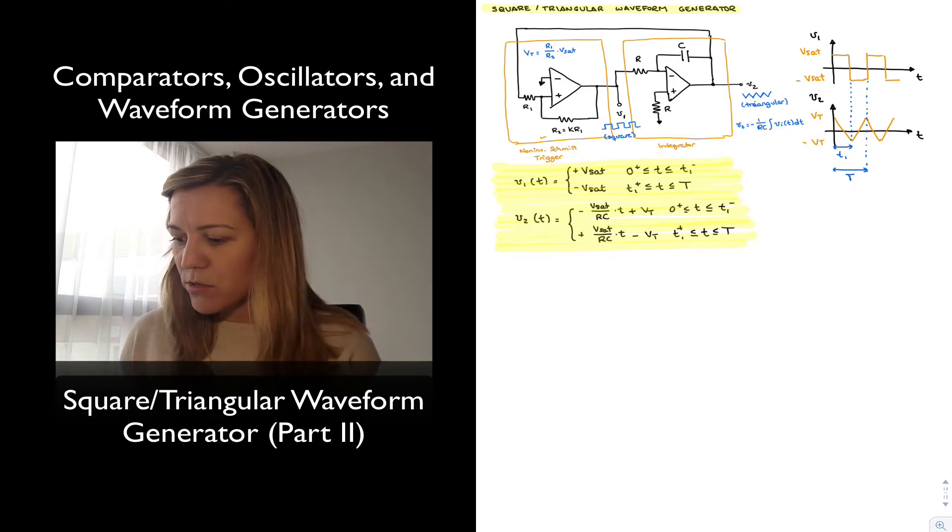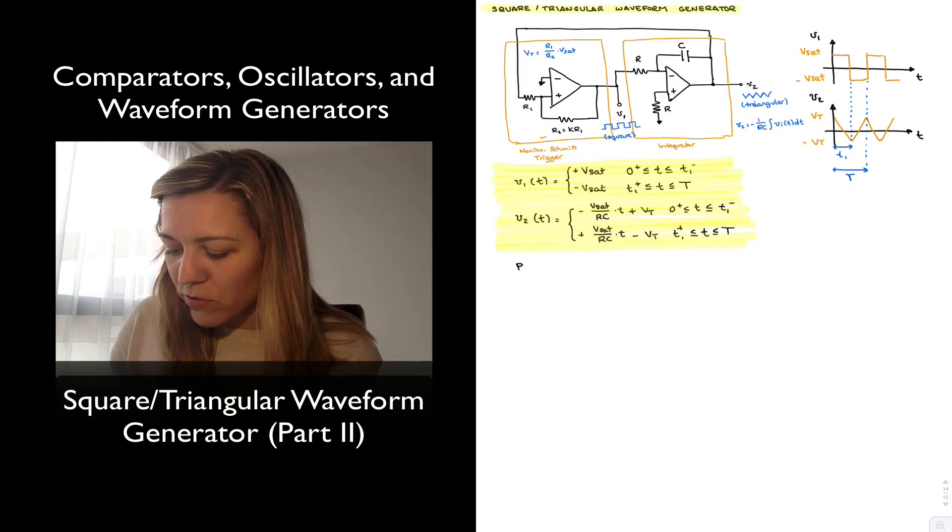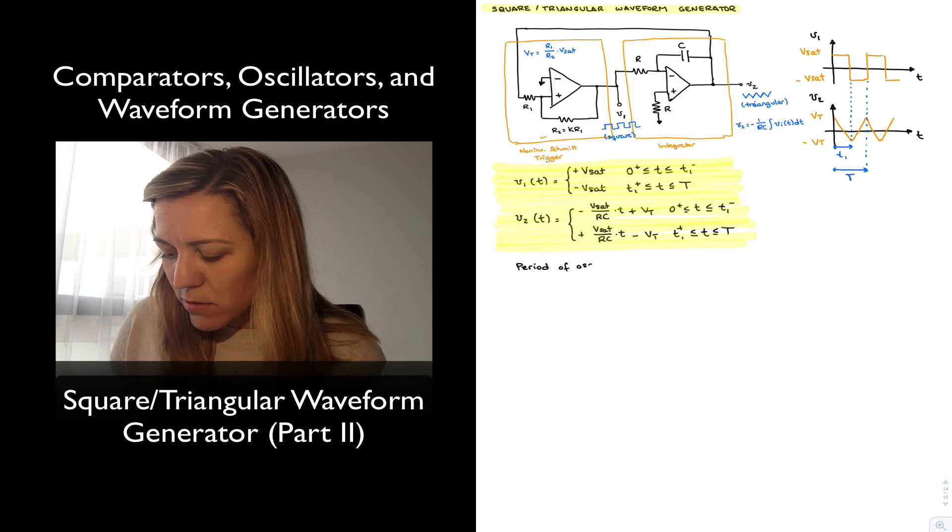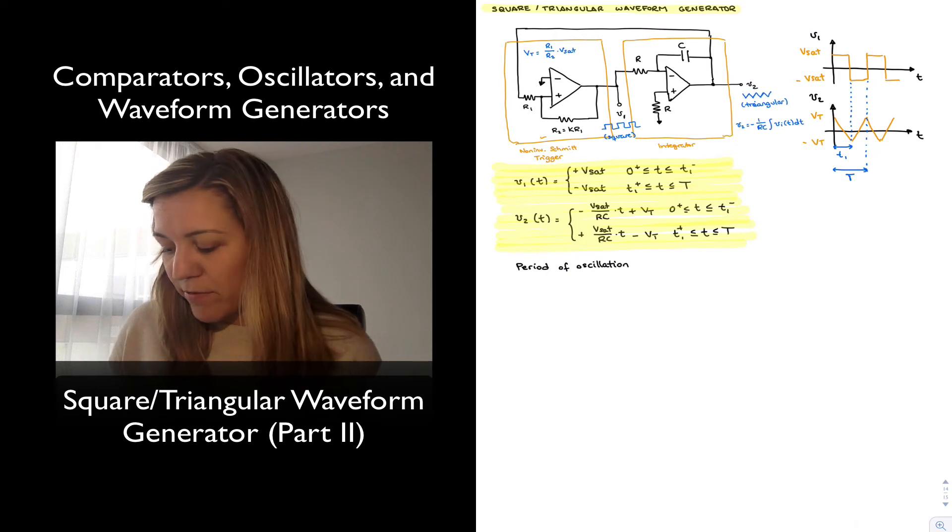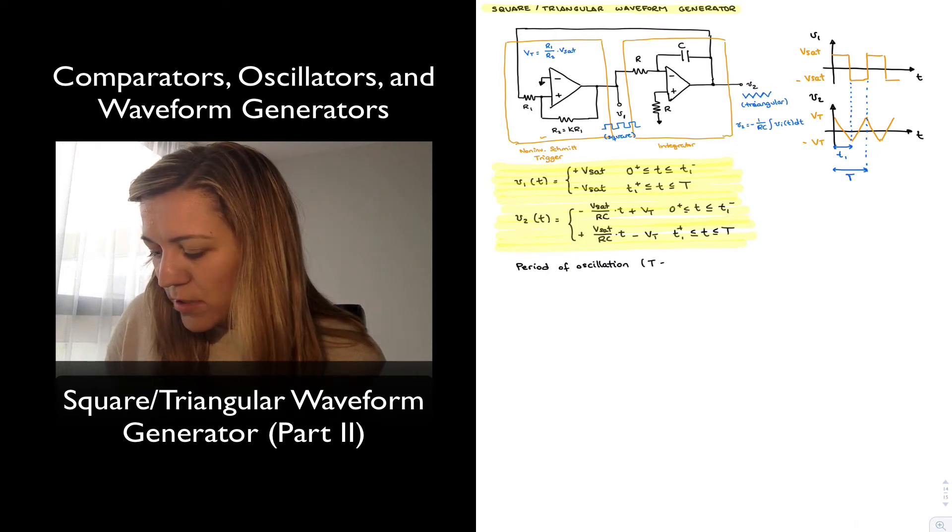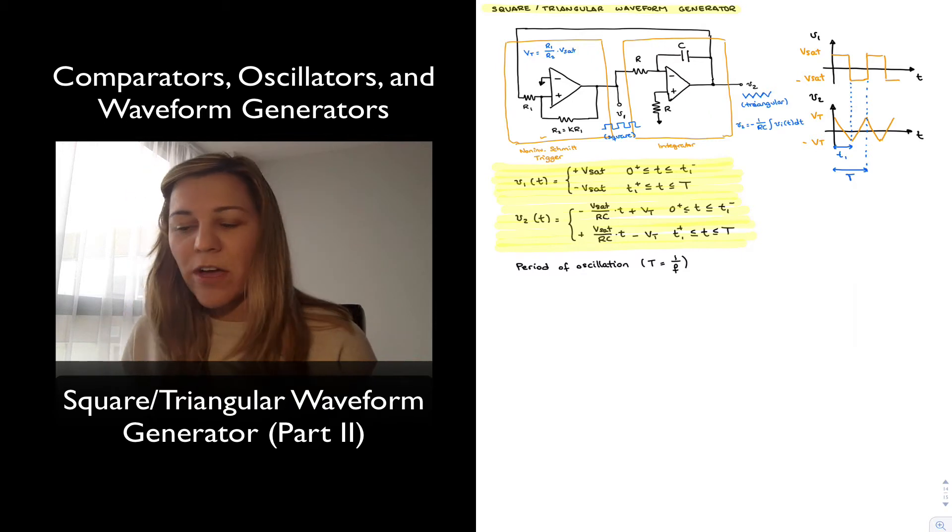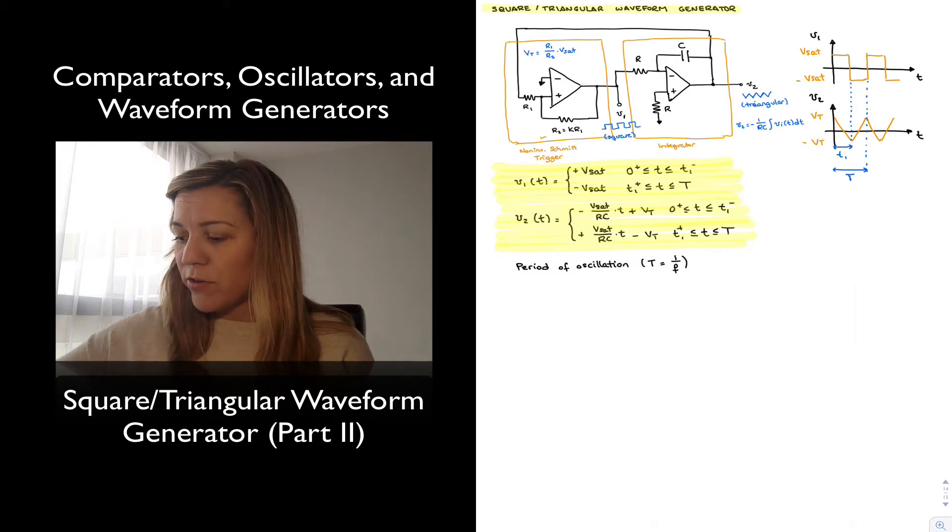And now we're going to find out the period of oscillation or the frequency of oscillation, which again is going to be the same for both the triangular wave and the square wave. So once we have one, we can figure out the other.